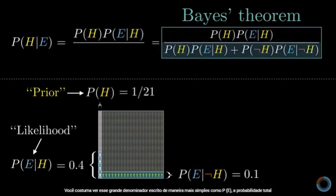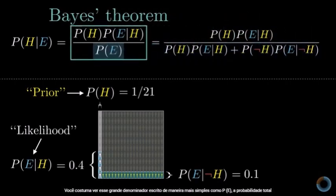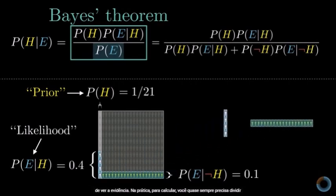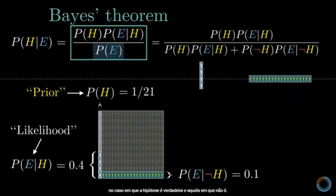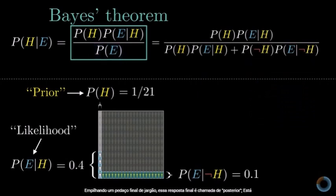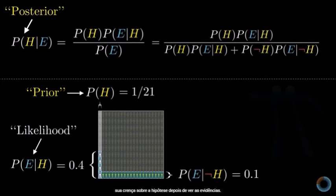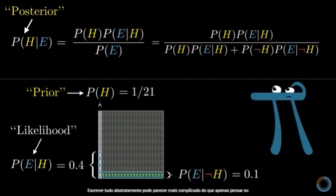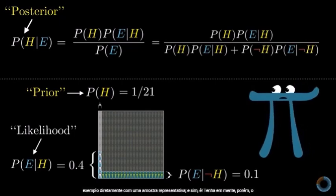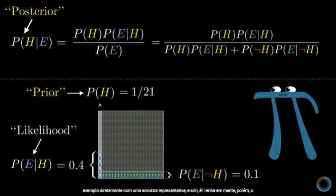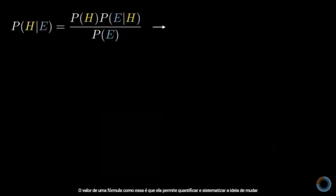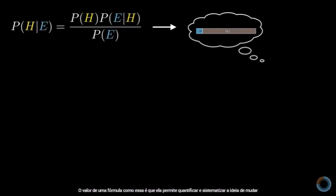More often you see the denominator written simply as P(E) — the total probability of seeing the evidence, which in our example would be 24 out of 210. But in practice, to calculate it, you almost always have to break it down into the case where the hypothesis is true and the one where it isn't. This answer is called the posterior — your belief about the hypothesis after seeing the evidence. Writing it out abstractly might seem more complicated than thinking through the example directly with a representative sample, but the value of a formula like this is that it lets you quantify and systematize the idea of changing beliefs.